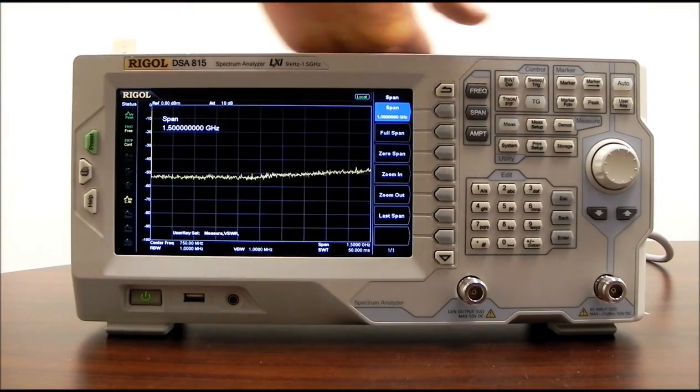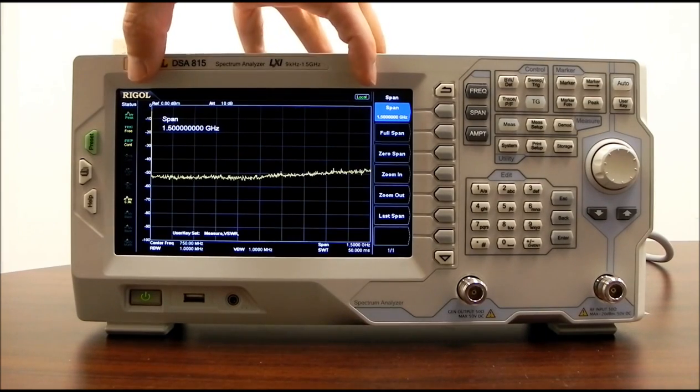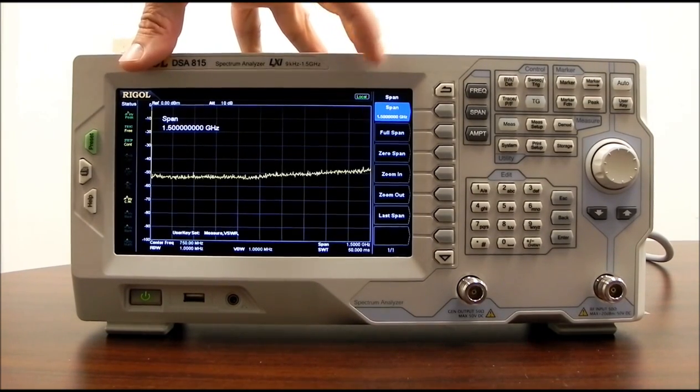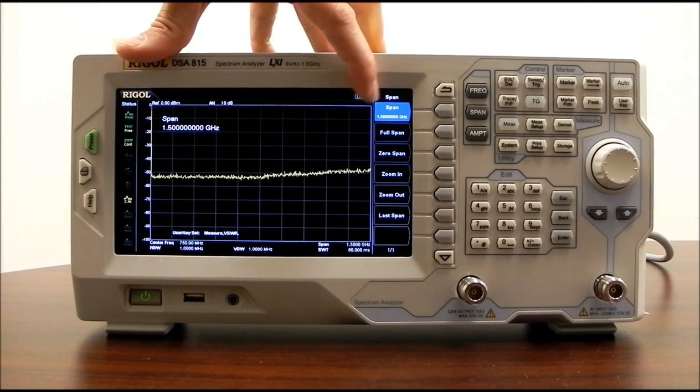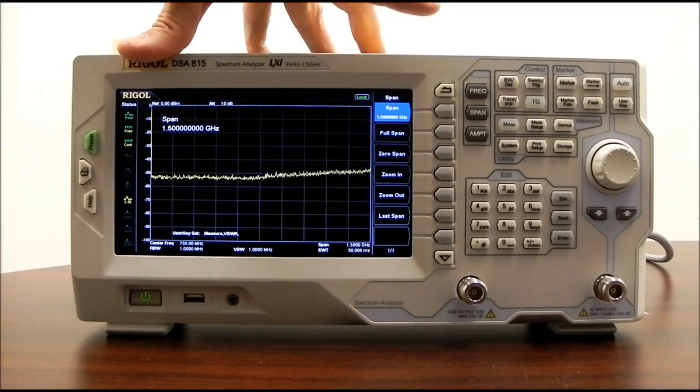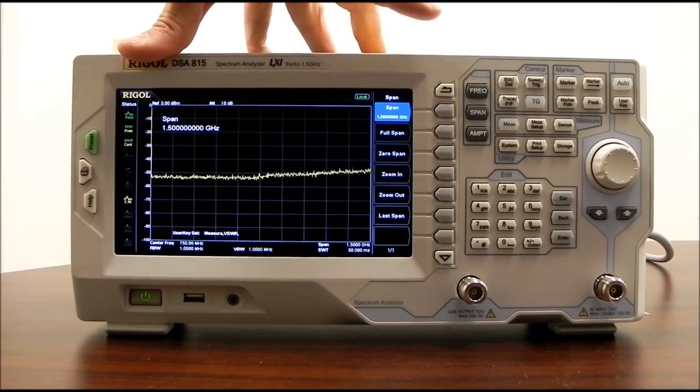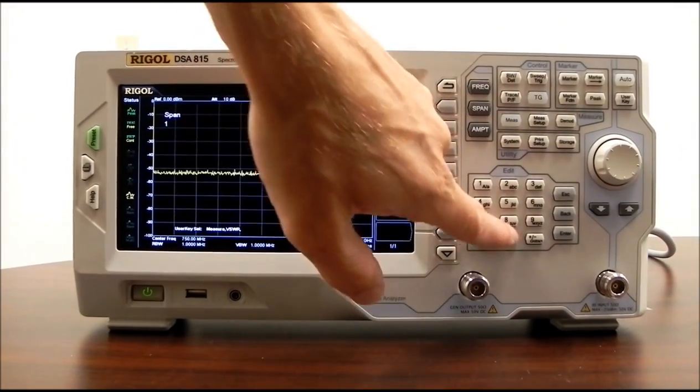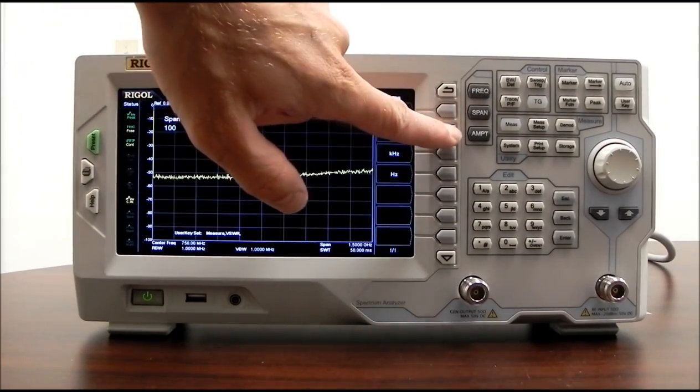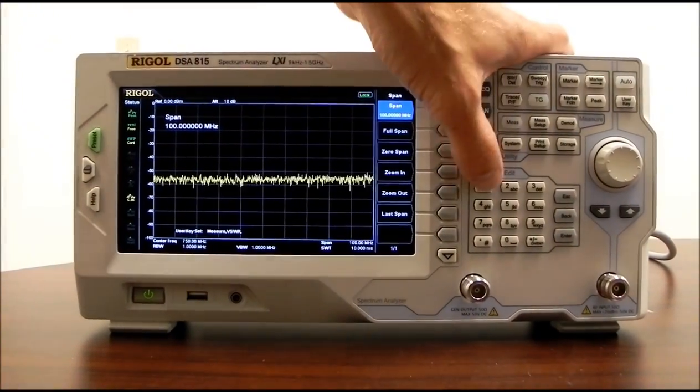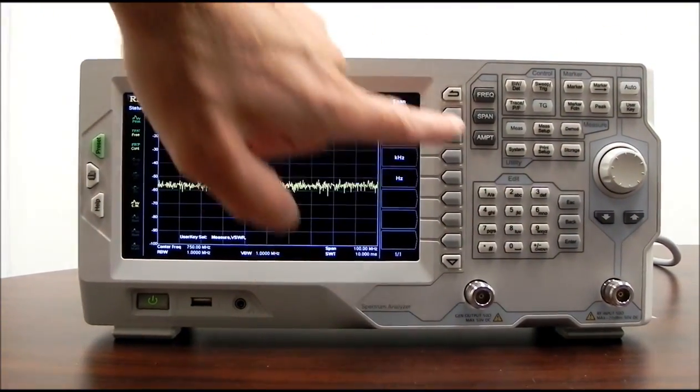Now we can go on to span. Span is the frequency range that we're scanning across. In this case, we're doing a full span of 1.5 gigahertz. If we wanted to change that, we could go to 100 and press megahertz, or we could go back to 1.5 and press gig.